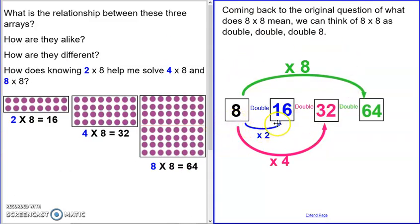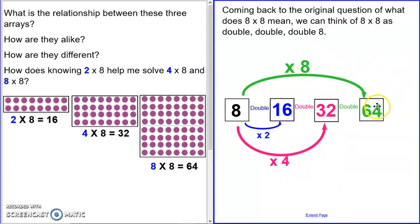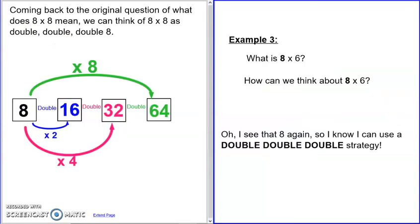Here's a way to represent the pattern. I doubled to get my times two fact, doubled my times two fact to get my times four fact — because two doubled is four — then doubled my four fact to get times eight, because four doubled is eight. We could even extend this: if I doubled again, what would be the times fact? It would be times 16, because if we double eight it would be times 16.